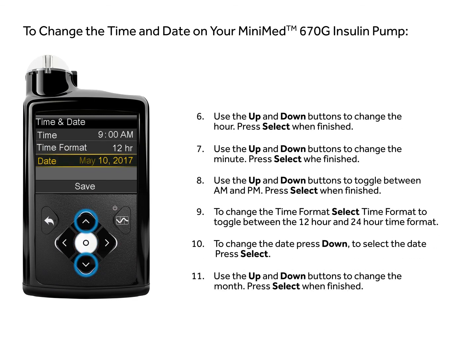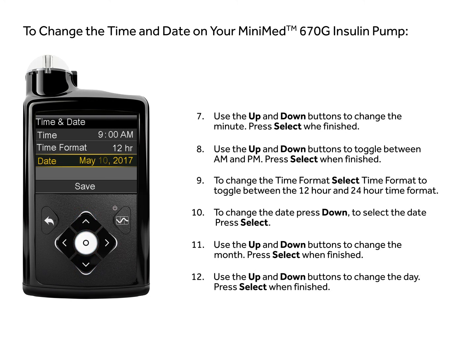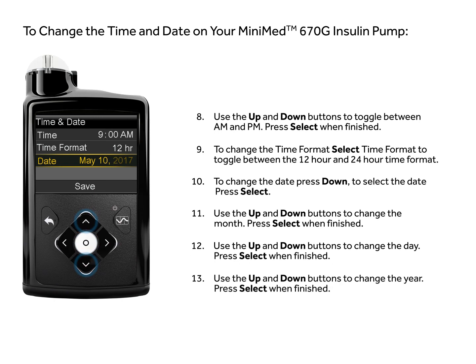Use the up and down buttons to change the month. Press Select when finished. Use the up and down buttons to change the day. Press Select when finished. Use the up and down buttons to change the year. Press Select when finished.